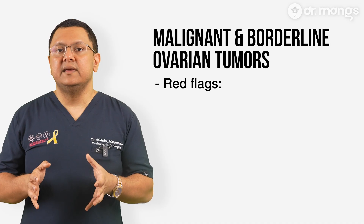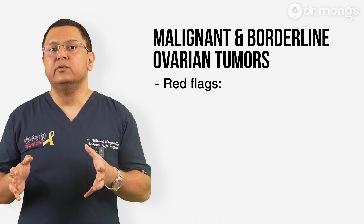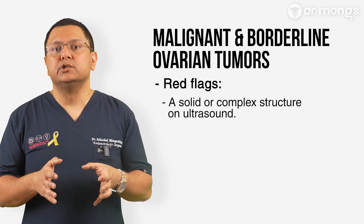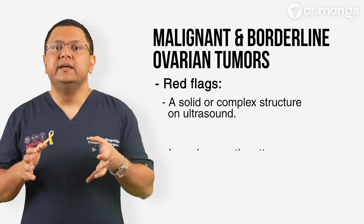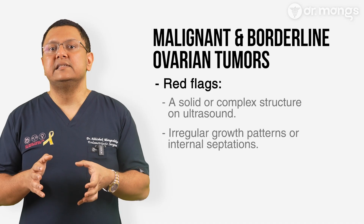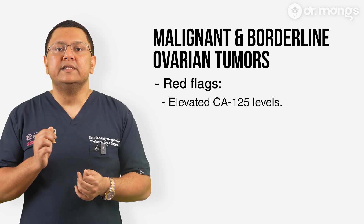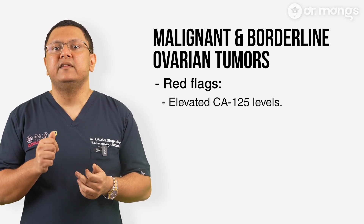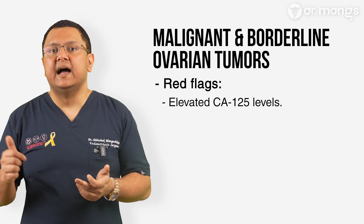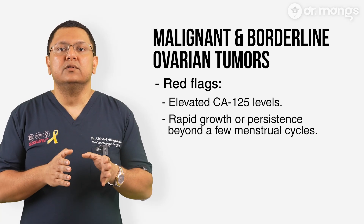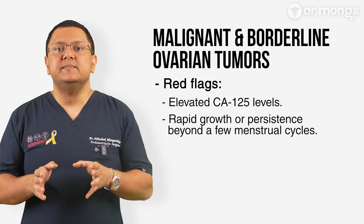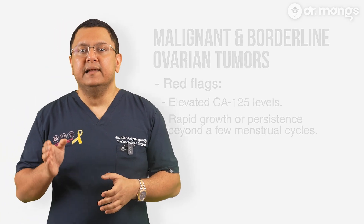Red flags that a cyst may be cancerous include a solid or complex structure on ultrasound, irregular growth patterns or internal septations, and elevated CA125 levels — though CA125 is not definitive, as it can also be high in endometriosis. Rapid growth or persistence beyond a few menstrual cycles is also concerning. If malignancy is suspected, immediate further evaluation with an oncologist is necessary.